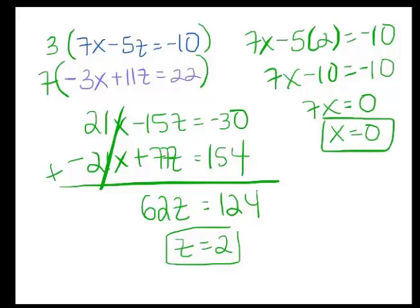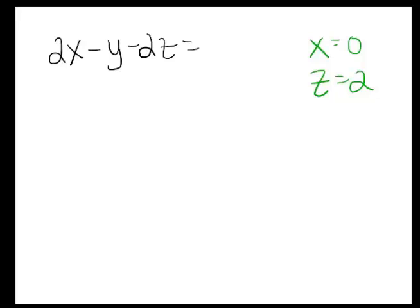Okay, so now I've got two of my variables. I just have to get the third one. Remember that the third one's y. So now I know that x equals 0 and z equals 2. So we're going to pick an equation from the original, just like we always do before. It doesn't really matter which one, so let's just use the first one we had. So we had 2x minus y minus 2z equals negative 3.